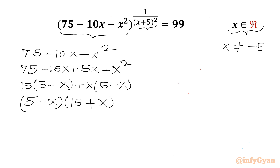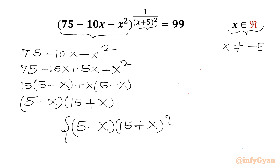Now I will write our equation: (5 minus x)(15 plus x) raised to the power 1 over (x+5)² equals 99. I will raise both sides to the power (x+5)², so using the exponent property I can cancel those powers on the left-hand side.